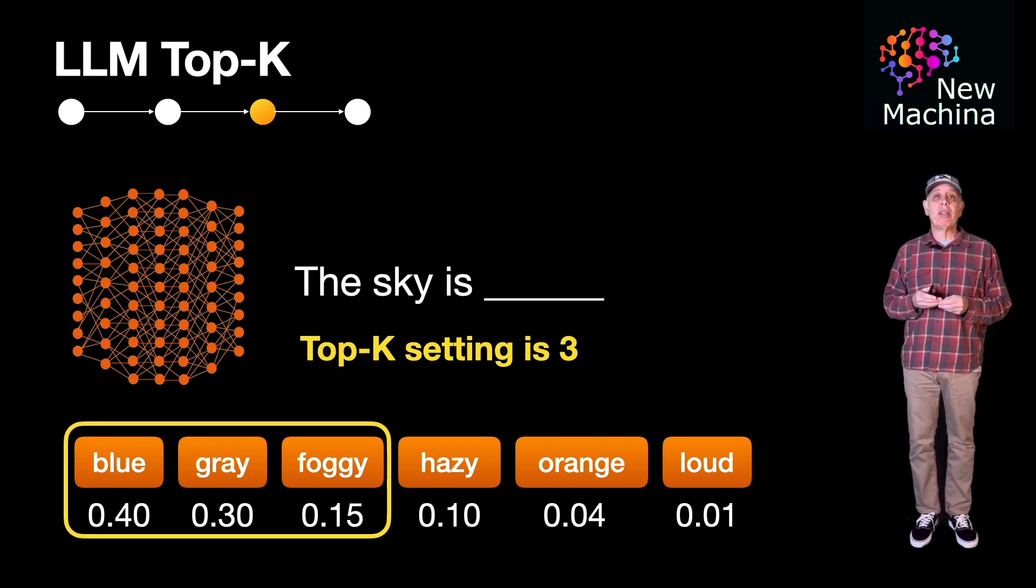So in this first example with Top-K equal to three, only the first three words will be considered by the LLM. In the second example with Top-K equal to five, only the first five words will be considered by the LLM.